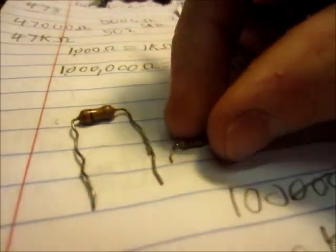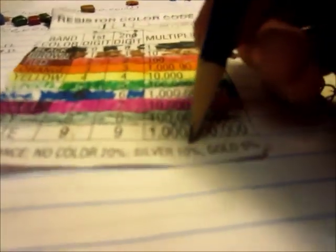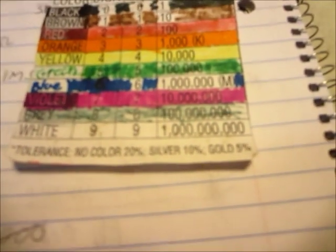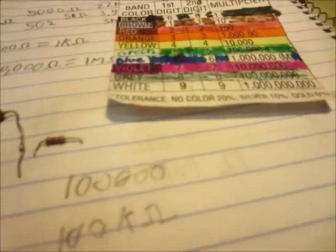And the last band, the fourth color, is the tolerance. This one is silver, so it's 10%. That's how accurate it is, or how precise. If it was gold, it's 5%. If it's no color, it's 20%.